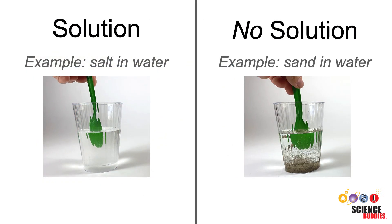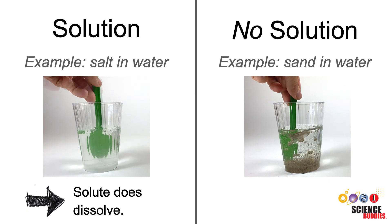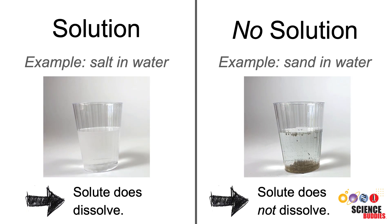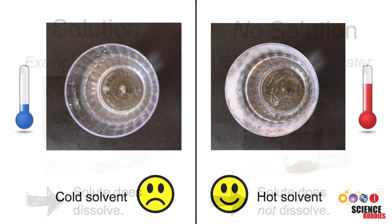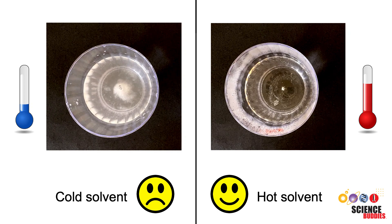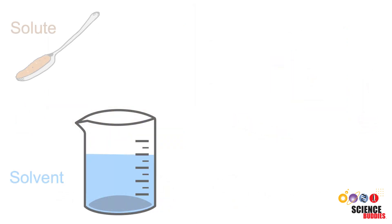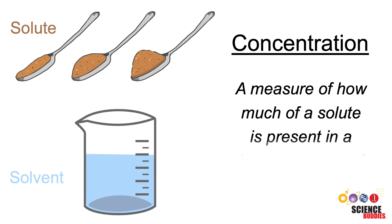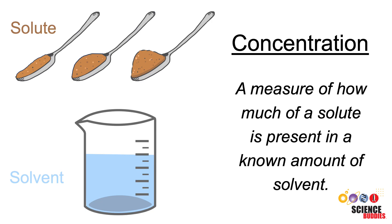Only solutes that dissolve in the solvent form a solution. If a solute does not dissolve in the solvent, no solution is formed. If a solute doesn't dissolve, it sometimes helps to heat up the solvent. The amount of solute present in the solvent determines its concentration. Concentration is a measure of how much of a solute is present in a known amount of solvent.